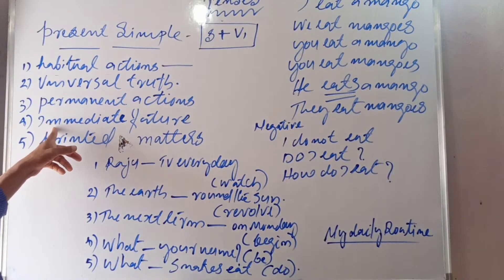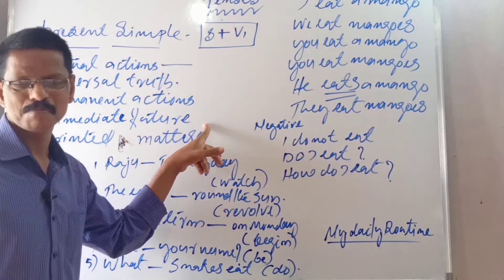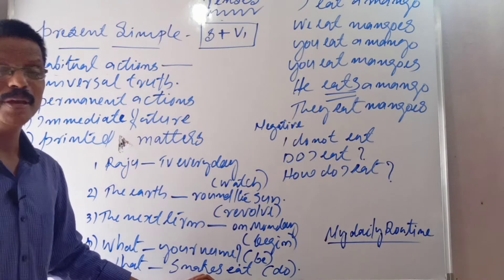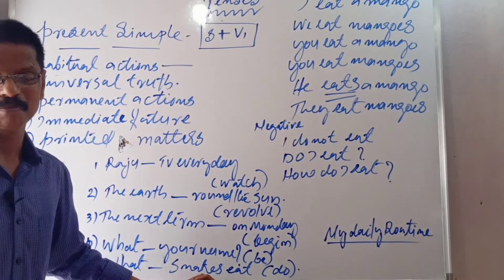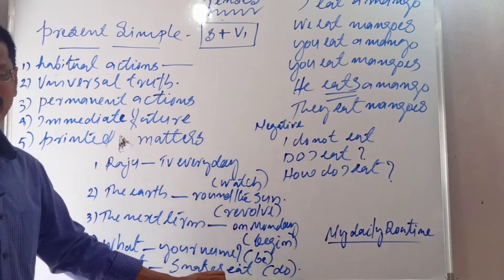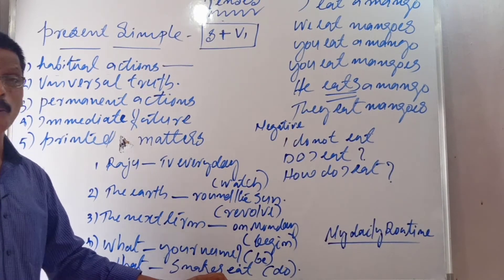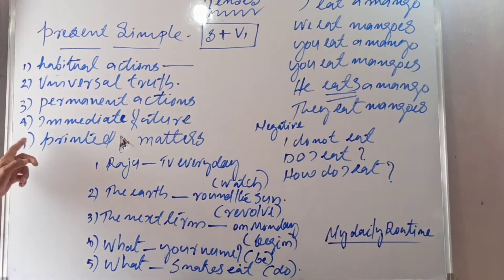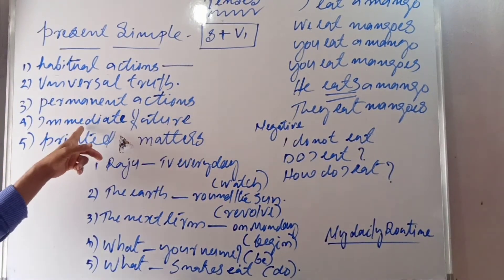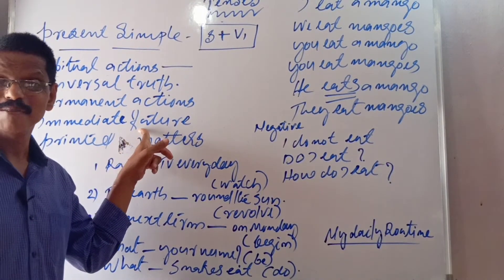Number four: Immediate future — not far away, very near. We start for America tomorrow. Our examinations begin on Monday. The school reopens on the 23rd of this month. Future which is immediate should be expressed using present simple tense.